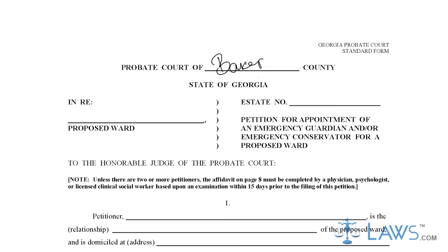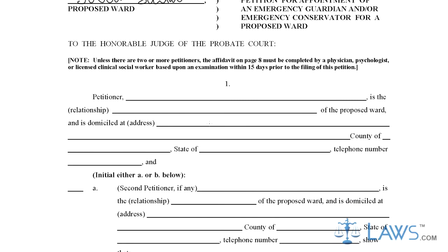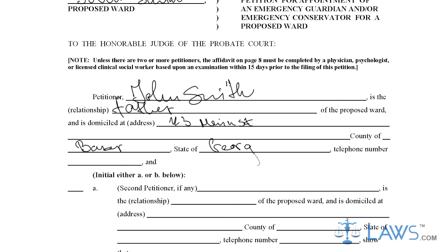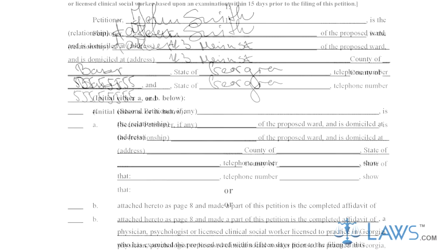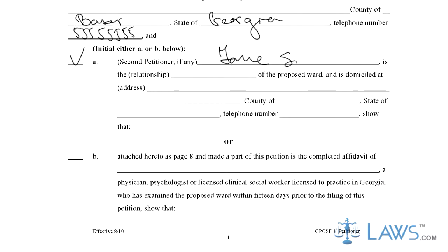Step 1. In Part 1, provide the name of the petitioner, the relationship to the proposed ward, and the address and contact information for the ward. Then initial either subsection A and/or B.